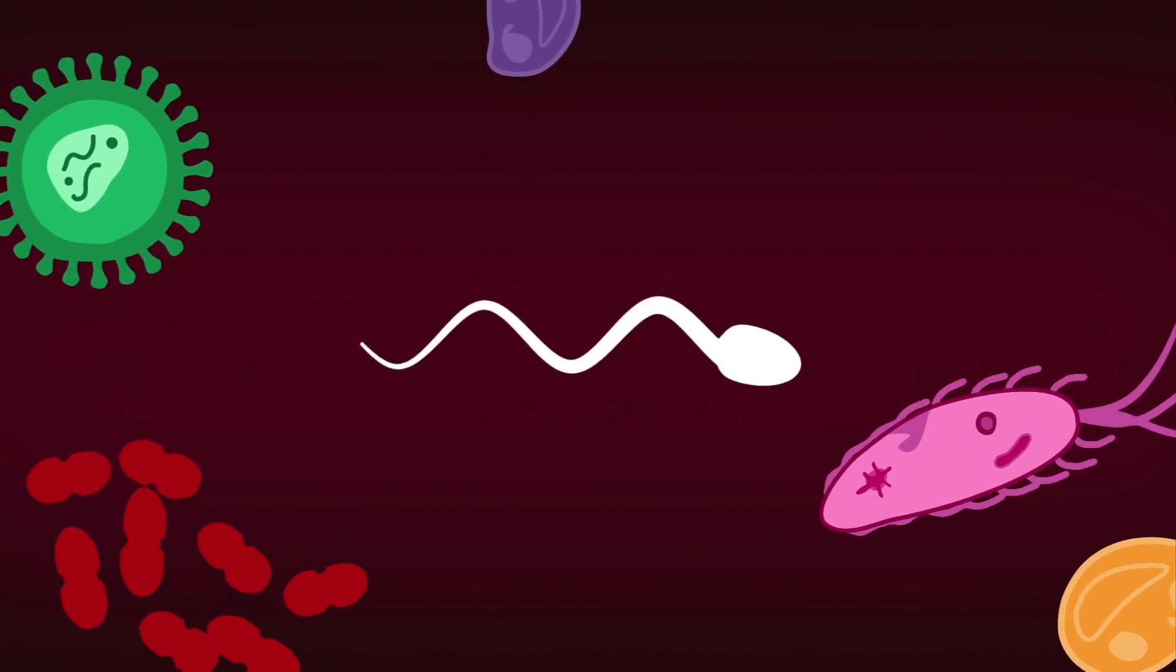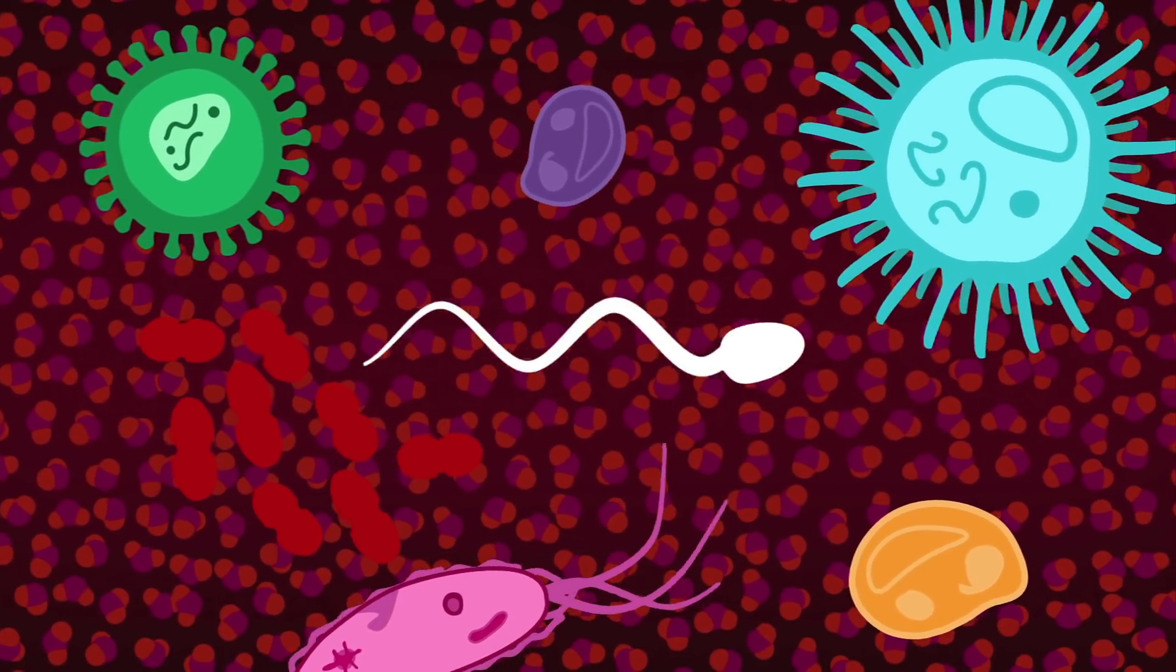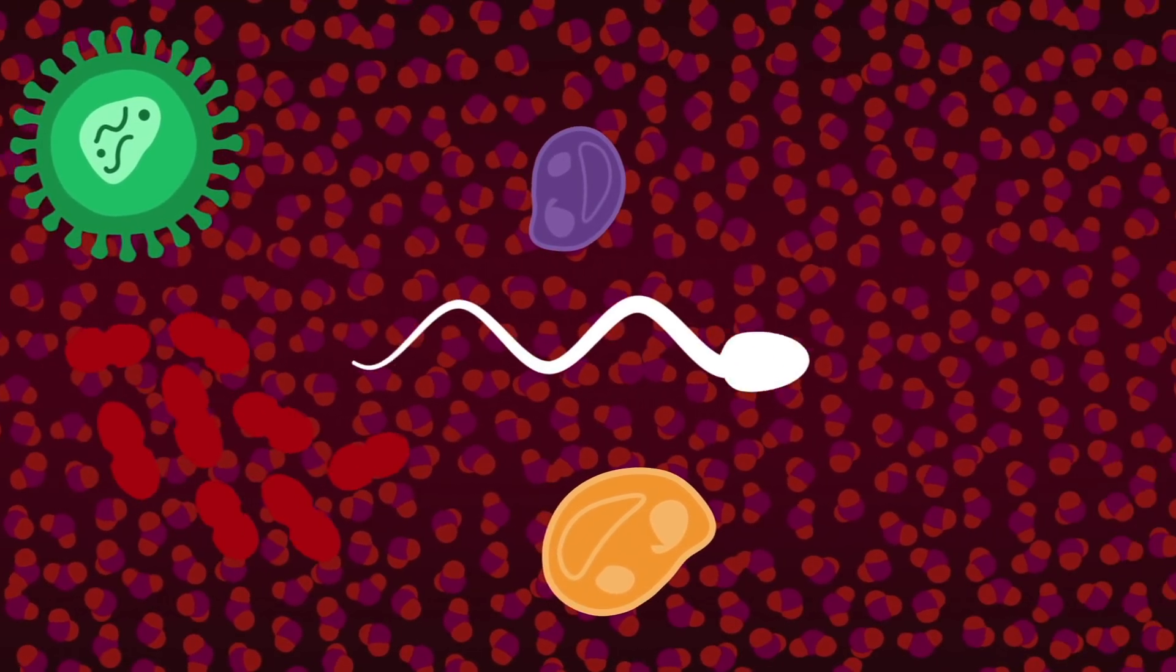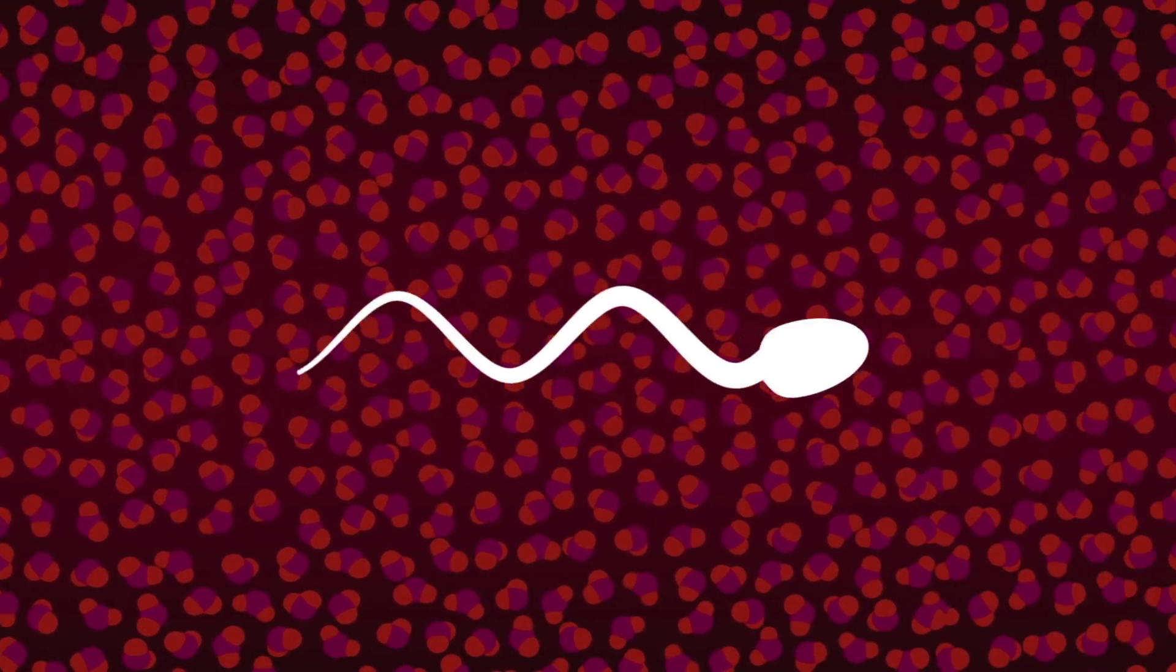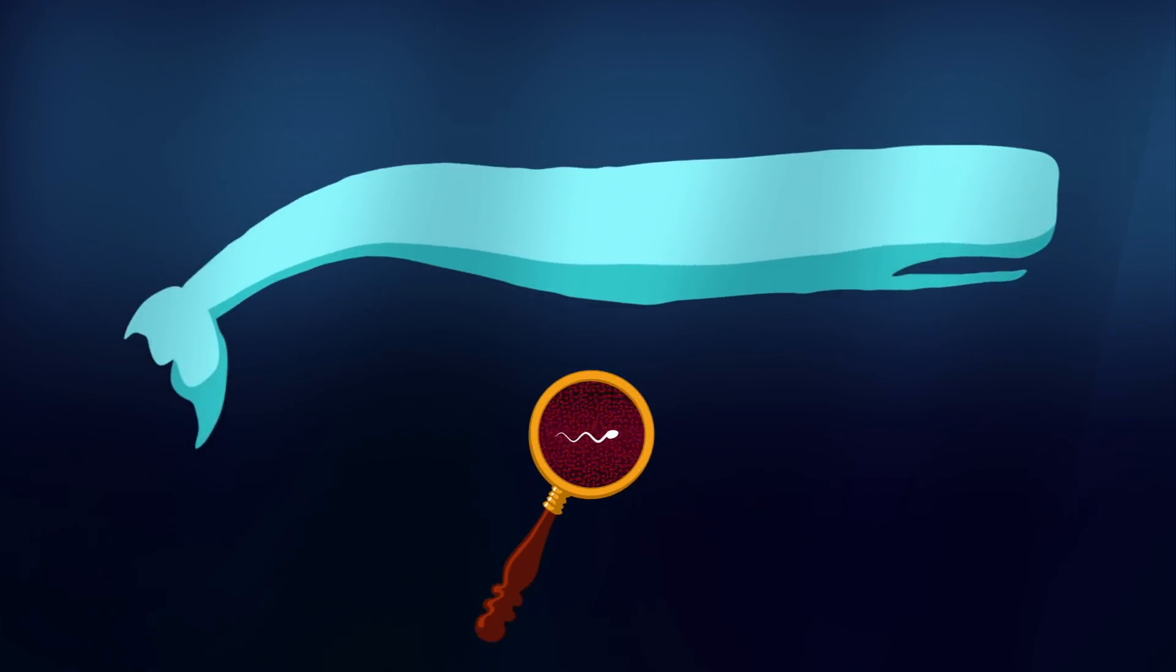It all has to do with being really small. Microscopic creatures inhabit a world alien to us, where making it through an inch of water is an incredible endeavor. But why does size matter so much for a swimmer? What makes the world of a sperm so fundamentally different from that of a sperm whale?